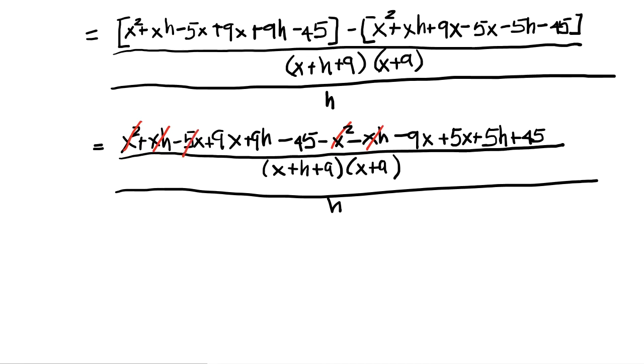I've got minus 5x and plus 5x. And I've got plus 9x here and minus 9x here, minus 45 here and plus 45 here. So this is going to simplify out. I've really just got two items left in the numerator: 9h and 5h. So I'm going to get 14h in the numerator.